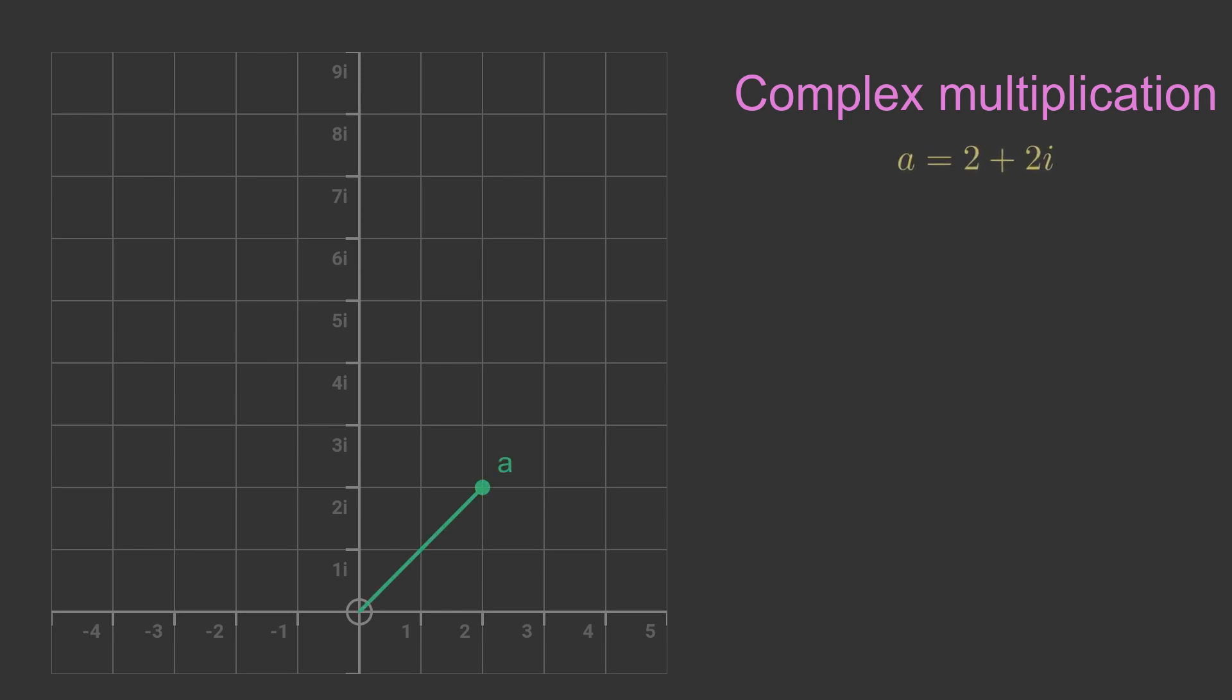Here is the complex number a equals 2 plus 2i, marked on an Argan diagram. It is the point 2, 2 on the diagram. Here is a second complex number b equals 1 plus 3i, which is at point 1, 3.